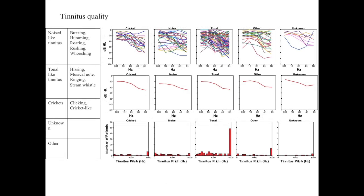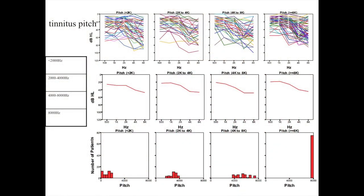Because of the importance of this, we looked at this quite systematically due to these theoretical issues. We had patients who reported their tinnitus was cricket-like, noise, tonal, and some others. These are their individual audiograms and their average audiograms — they were pretty similar even though they had different descriptors for their tinnitus. Those patients who reported they had tonal tinnitus were much more likely to have a high frequency pitch match. The others, not so much. We also compared the patients who had low frequency pitches, mid frequency, and high and very high frequencies, and again their audiograms were the same in spite of the tinnitus pitch match frequency.